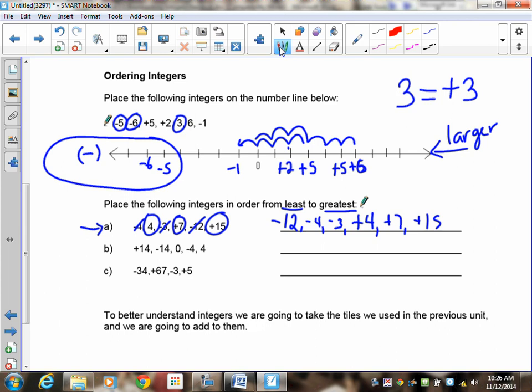Okay. Welcome back. Biggest negative number, negative fourteen. Next biggest number, negative four. Followed by zero. Followed by four. And then finally, positive fourteen. For C, the largest negative number is negative thirty-four. That means it's the smallest. Then comes negative three. Then comes positive five. Finally, positive sixty-seven. So there's how you put them in order.